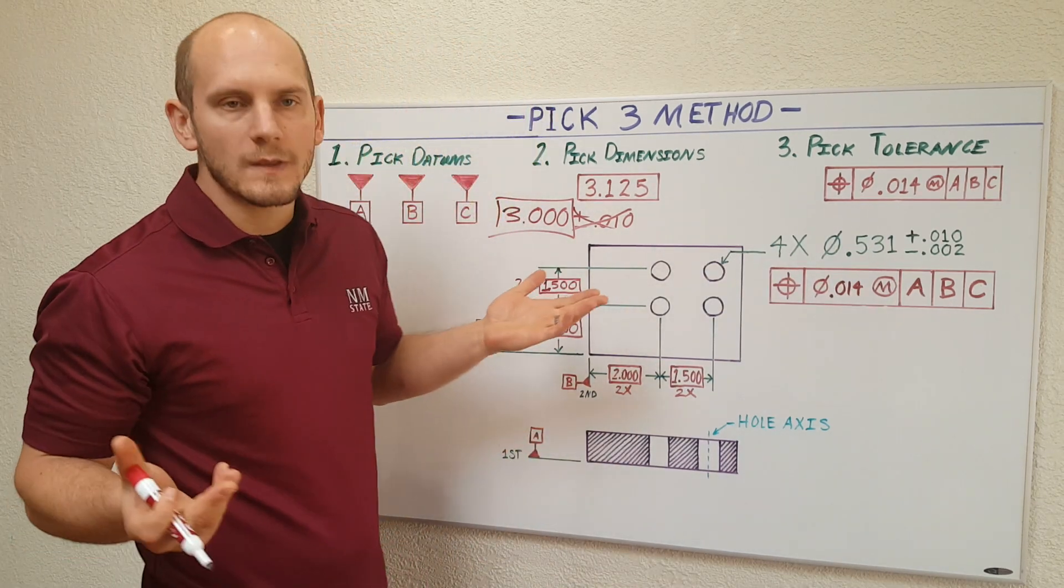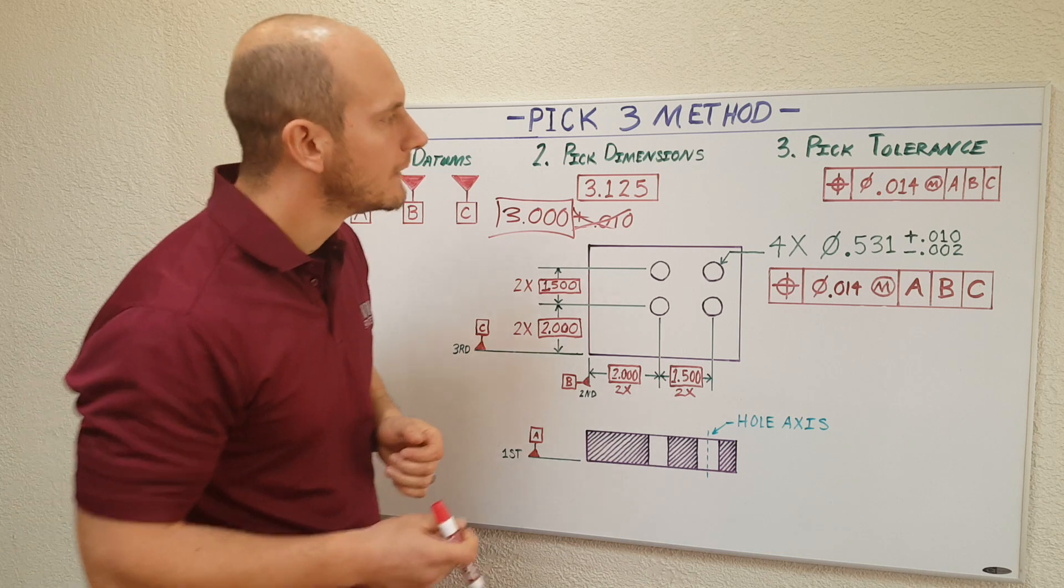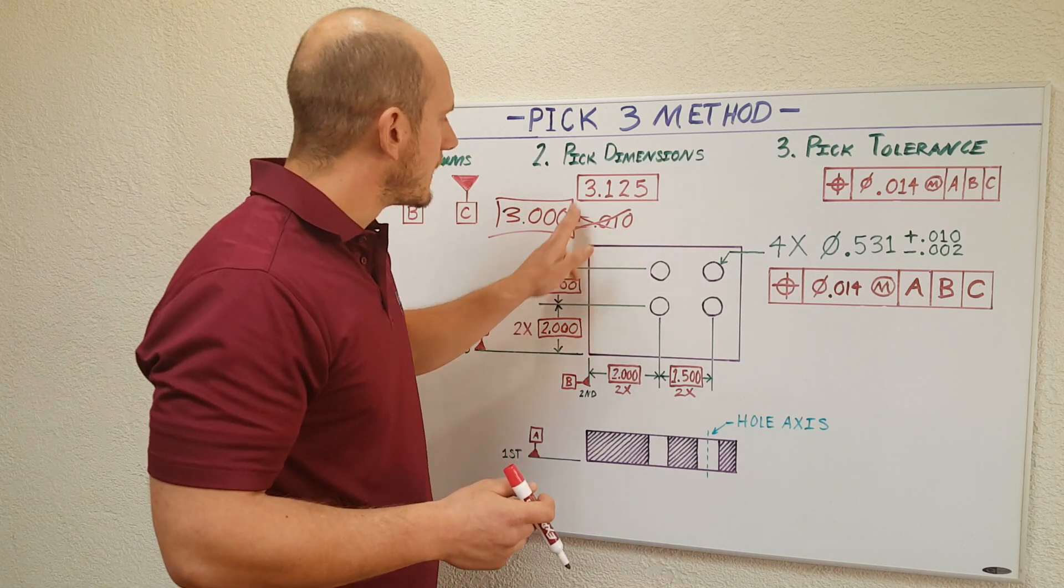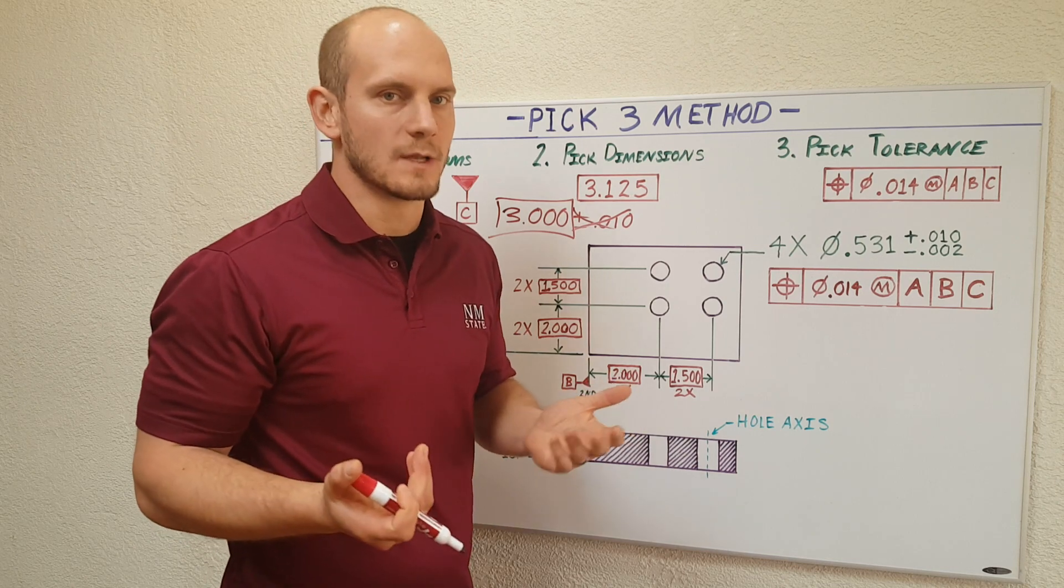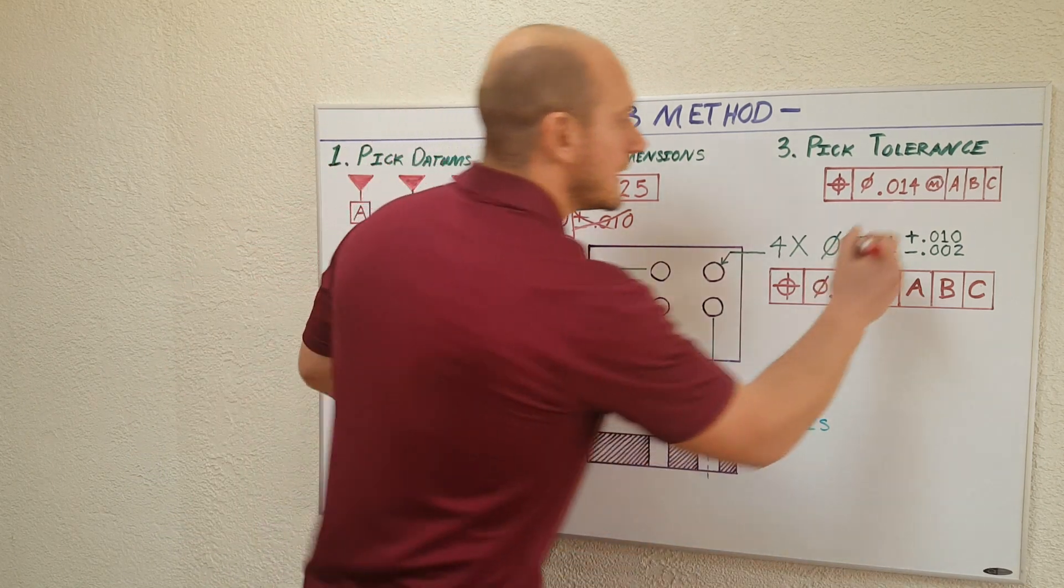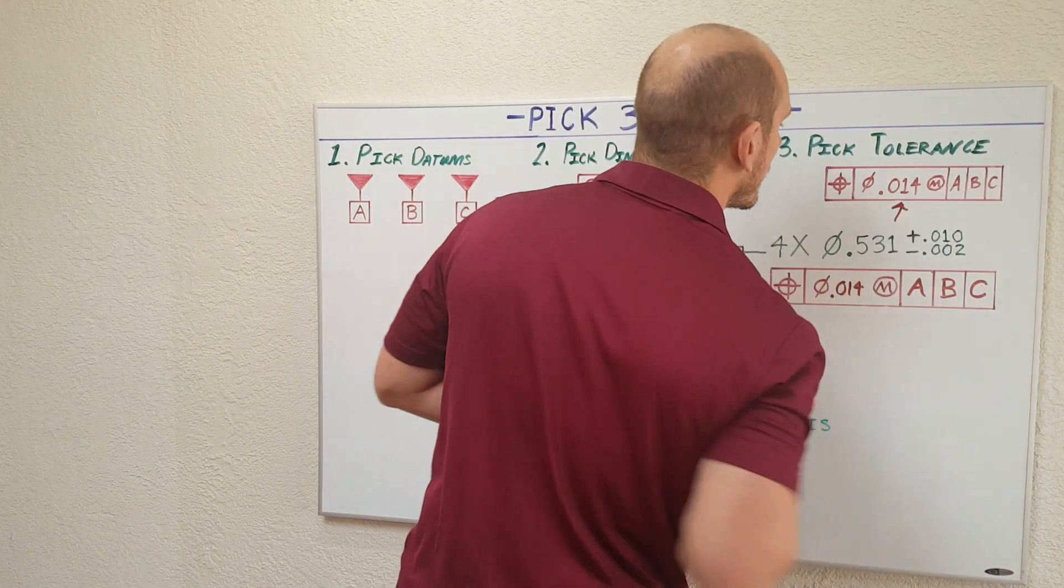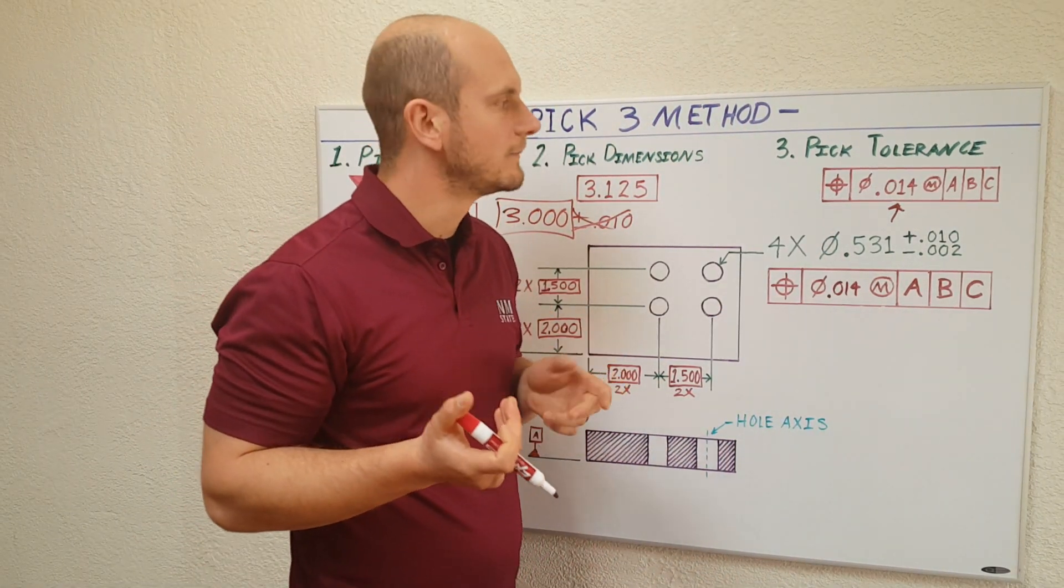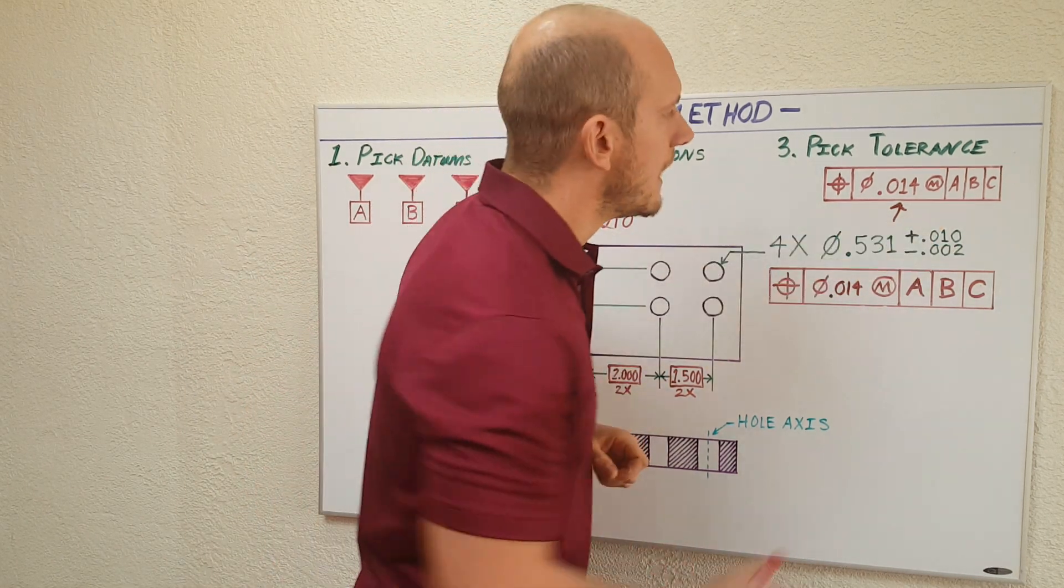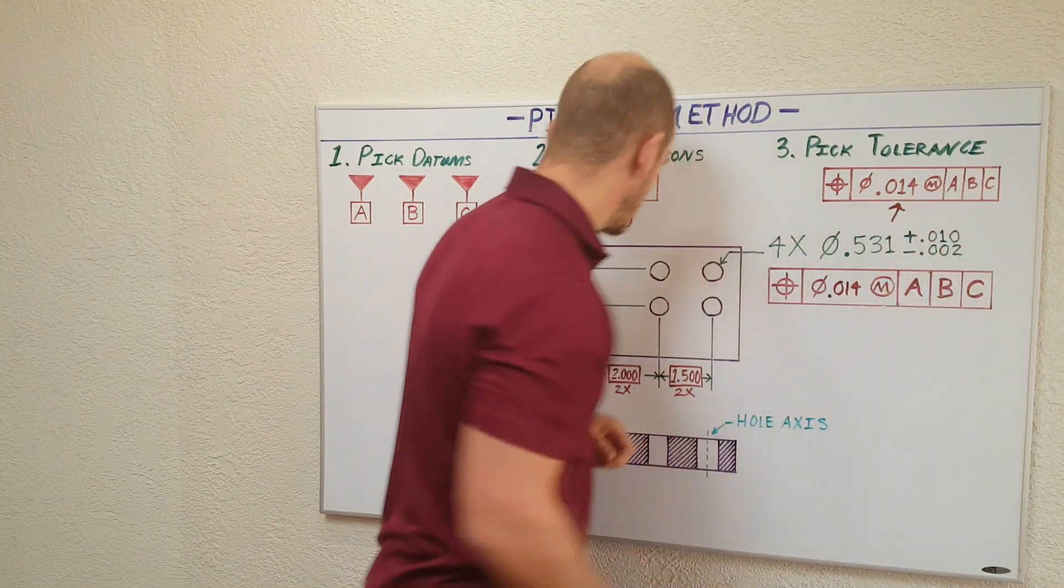All right, so third thing you're going to do, you're going to pick your tolerance. Now, we've eliminated the plus or minus off these distance dimensions, so you've got to give the machinist tolerance somewhere. And where you do that is right here in your GD&T symbol.